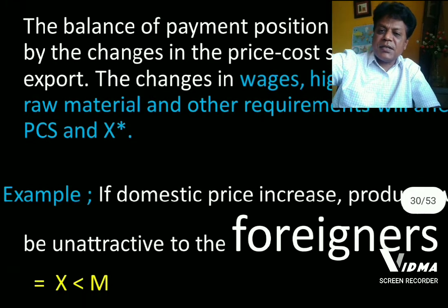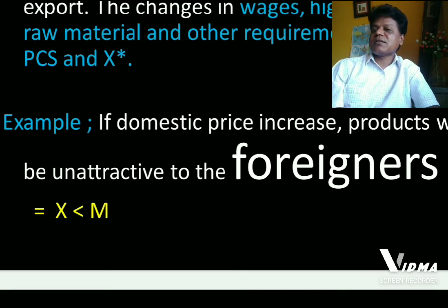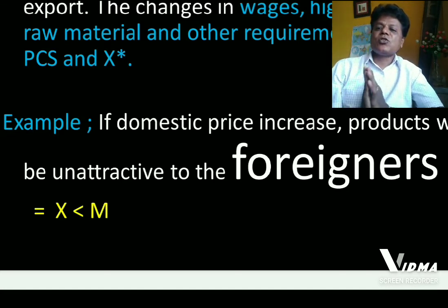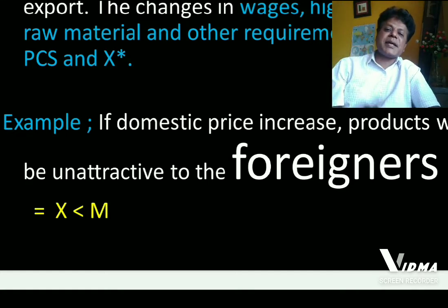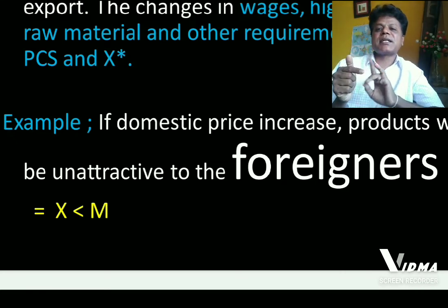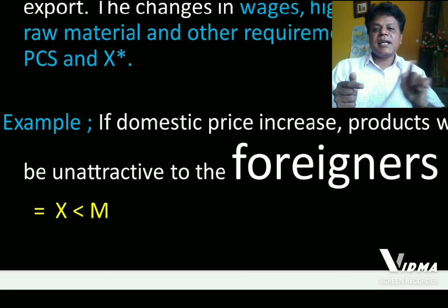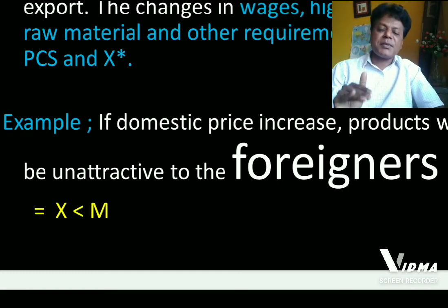Here is a simple example to explain how price-cost structure brings about change in exports and imports. We assume that domestic prices increase. When domestic prices increase, the domestic products will become unattractive to foreigners. When prices of domestic goods and services increase, foreign demand for our domestic goods and services will come down, and exports will come down.